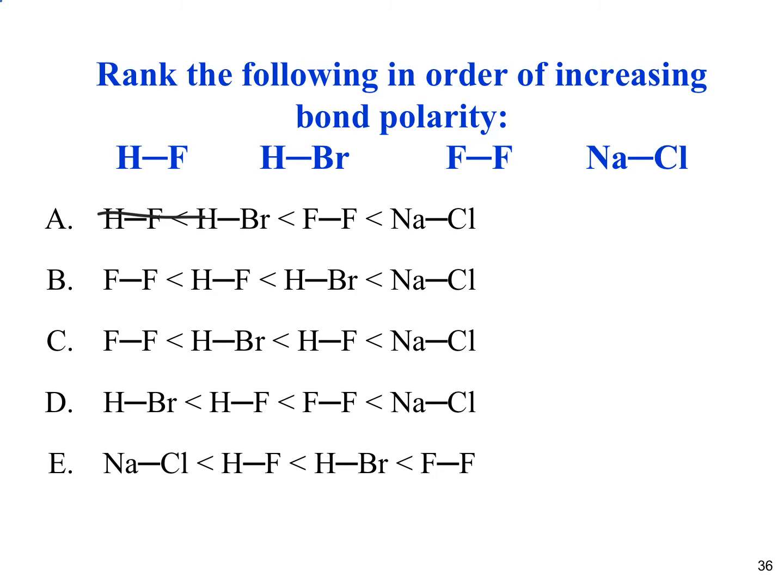We can eliminate the first one because it has HF as the least polar. B and C both have F-F, the fluorine molecule. Those are two of the same elements, so it's going to be nonpolar. So we can eliminate D and E as well.